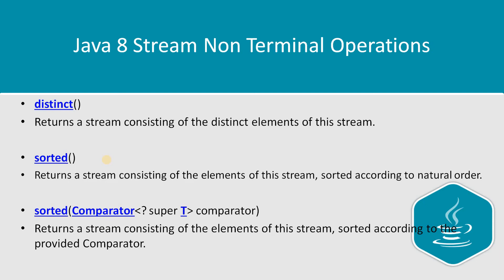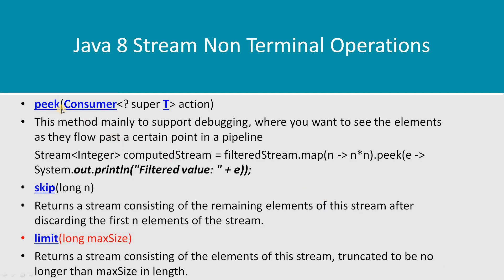Sorted returns a stream in natural sorting order, but if you want to change the order you can pass a Comparator. There is a variant of sorted that accepts a Comparator as input, allowing you to customize the sorting order as per your need.